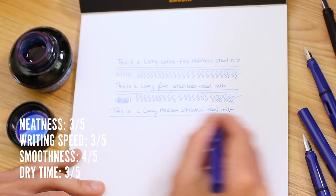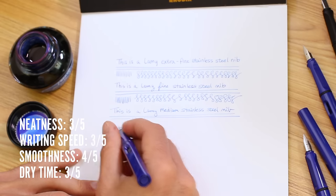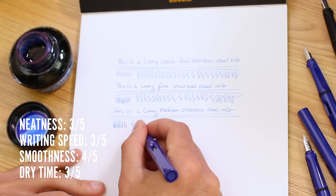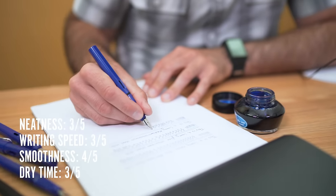Similarly to the fine point, some translation is needed between eastern and western sizing. Generally, a western medium nib is more like an eastern broad nib. An eastern medium nib behaves more like a western fine nib.